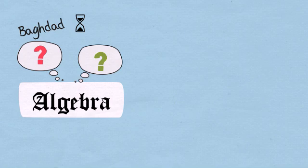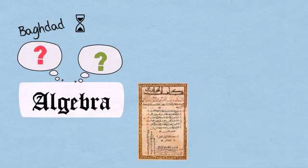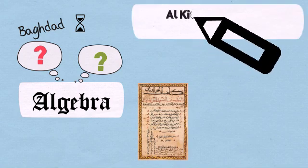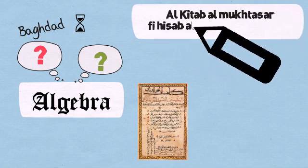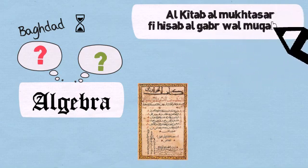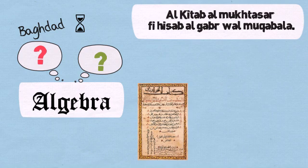The word algebra comes from an Arabic book, whose title is Al-Kitab, Al-Muqtasr, Vihisab, Al-Jabar, Va-Al-Muqabla. This title is the source of the word algebra.